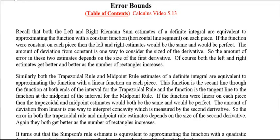So recall that both left and right Riemann sum estimates of a definite integral are equivalent to approximating the function with a constant function, a horizontal line segment on each piece. If the function were constant, or at least constant on each piece, then the left and right estimates would be perfect, and they would be the same as each other and the same as the actual integral. So the amount of deviation from constant is going to be how much they're off. One way to measure that is with the derivative, the first derivative.